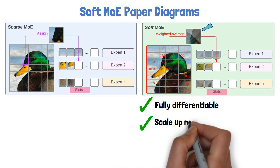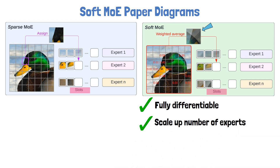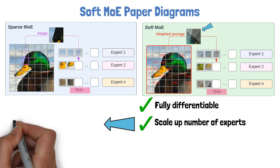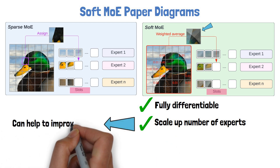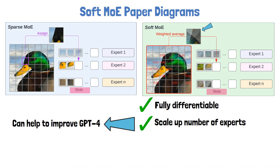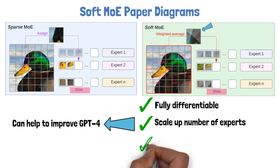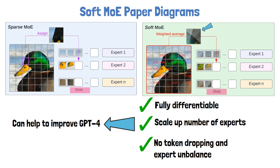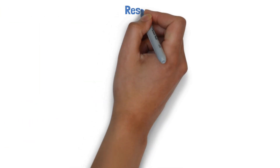This is possibly also what helps this method to scale up the number of experts. If this method is applied successfully to large language models, it can be the driver to improvement over GPT-4, which is using Mixture of Experts according to reports. Additionally, while in Sparse MOE a token cannot be assigned to any expert, or one expert could be assigned with much more tokens than other experts, here all tokens are taken into account in each expert, so there is no token dropping or expert imbalance.